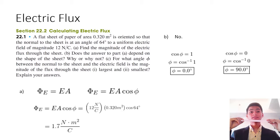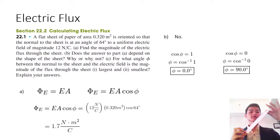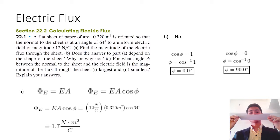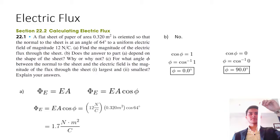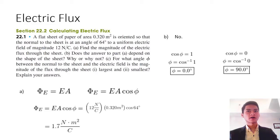If angle phi is zero degrees, that means the plane is directly perpendicular to the electric field, because if the plane is perpendicular to the electric field, then the normal to that plane is parallel to the electric field. Cosine of zero is one, so that gives us the largest possible value for flux.